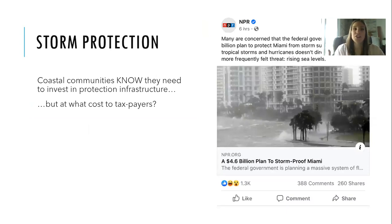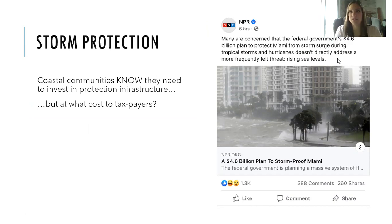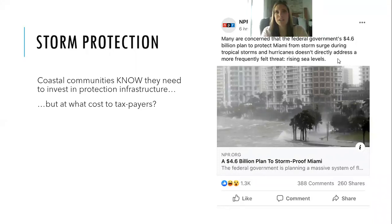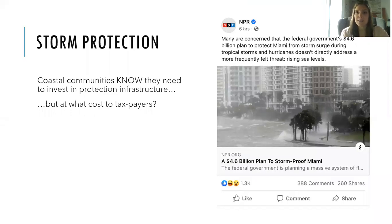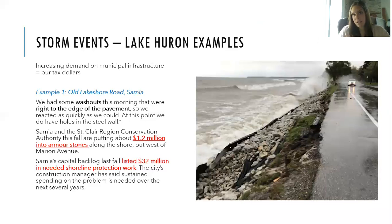Communities along Lake Huron know they need to invest in protection infrastructure, but at what cost? You can engineer the heck out of your shoreline, but it all depends on how much you are willing to pay and how long that hardened shoreline will protect you. This article from NPR Miami shows they need to invest $4.6 billion to protect themselves from tropical storms and hurricanes — a massive initial investment with ongoing maintenance costs that becomes quite a burden to the municipality. On Lake Huron, that's very much an issue and consideration for our municipalities as well.